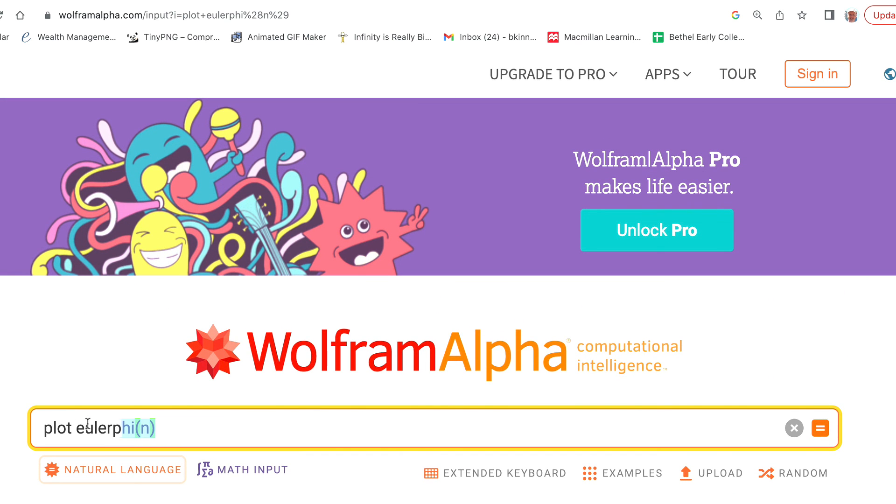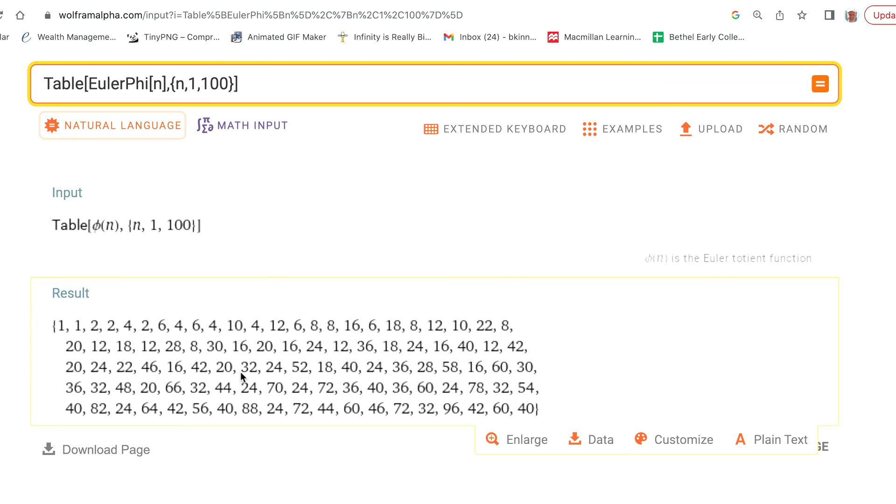You can also get Wolfram Alpha to list values of the Euler totient function in a table. Essentially, I'm using Mathematica code to do so. If you want to see the first 100 values, you can enter this code, and the output will be a list. These are the values of φ(n) when n goes from 1 to 100. Thanks for watching.